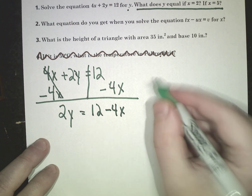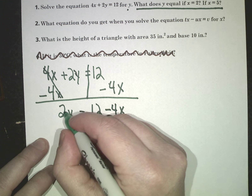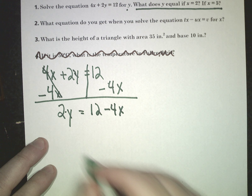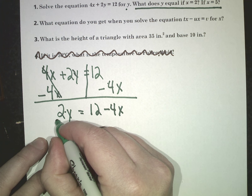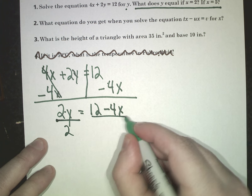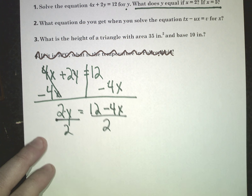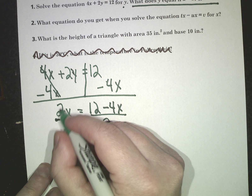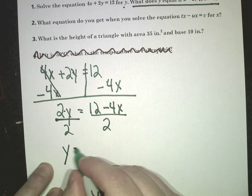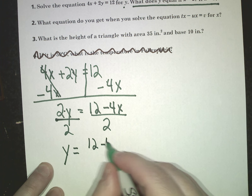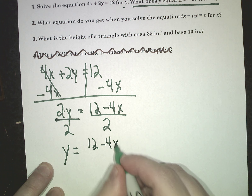Remember, we always did addition and subtraction first if we could. Then we see 2 times y — this means multiplication. So opposite of multiplication is division. I'm going to divide both sides by 2. I divide this by 2 and I get y equals 12 minus 4x over 2.